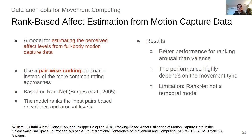Finally, in collaboration with William Lee, we worked on a model for estimating perceived affect levels from full body motion capture data. For this project, instead of using the more common rating approach for annotating valence and arousal levels, we rank pairs of inputs and train a model based on RankNet, which is especially designed for pair-wise ranking. Our results show that the model has better performance for ranking arousal levels than valence. Also, the performance of the model highly depends on the movement type, and one of the main limitations of RankNet was that it wasn't a temporal model.